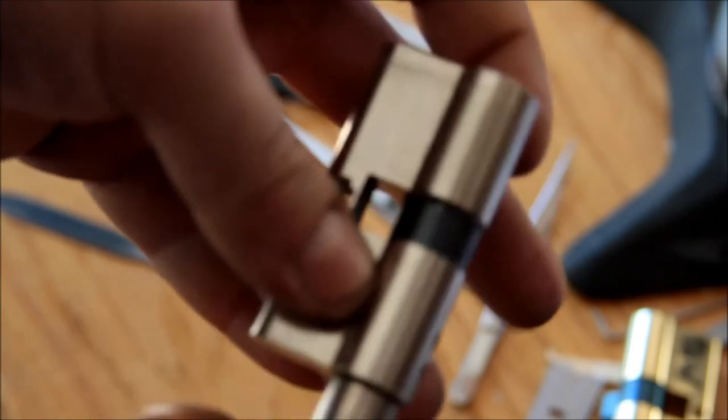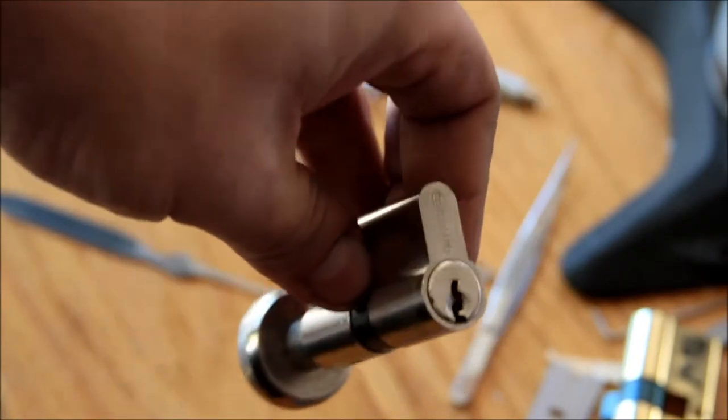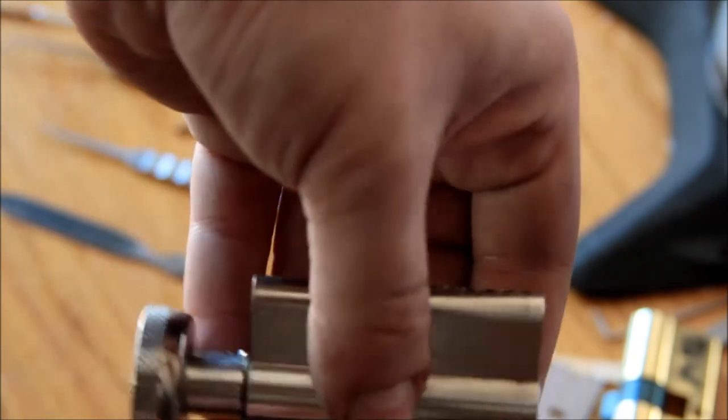So I'm curious as to what the pins are in this. I've not really spent much time disassembling Euro cylinders. So I may give it a shot, and if I do, I'll get some video and post that along with this.